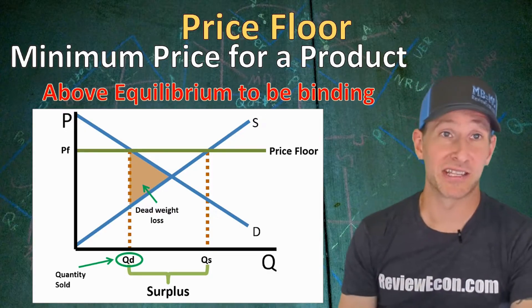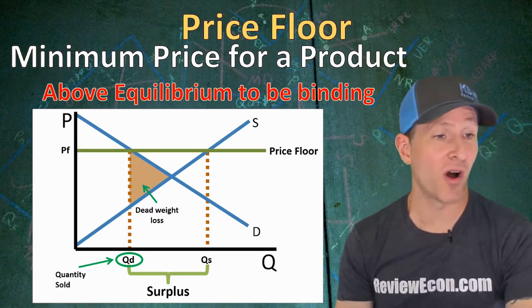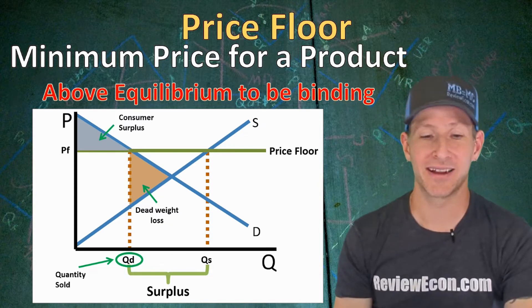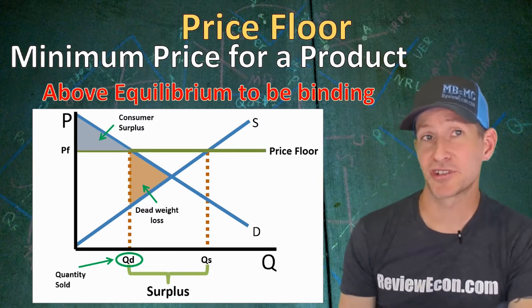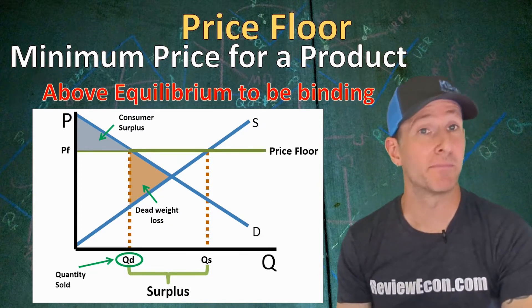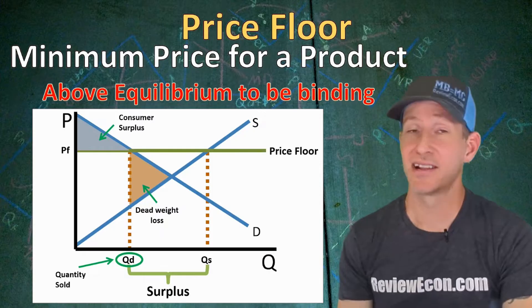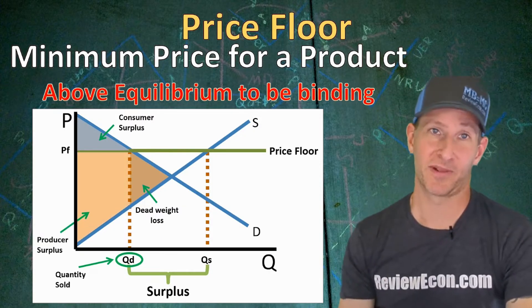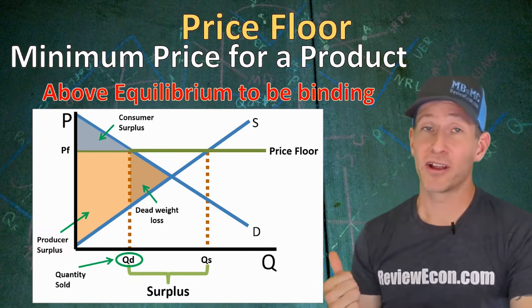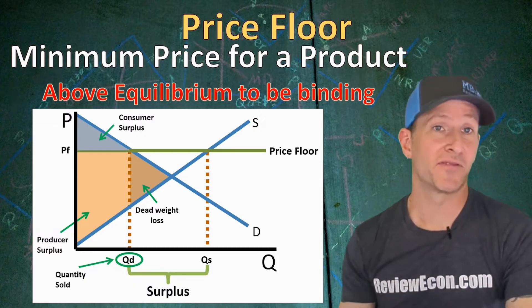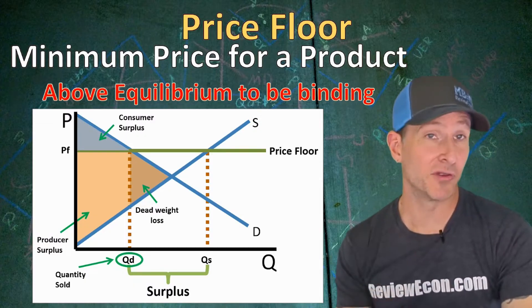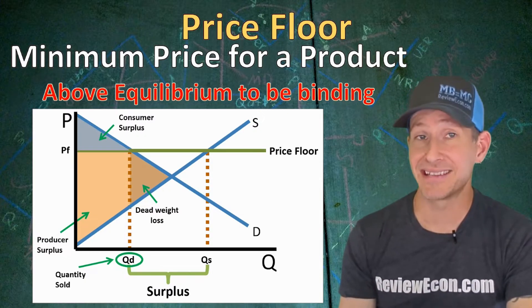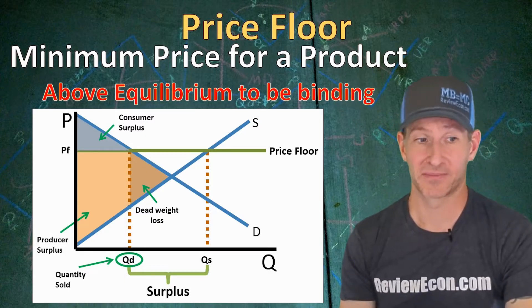Our consumer surplus is from the price all the way up to the demand curve — that triangle right there. The producer surplus is found by going from the PF price down to the supply curve at the quantity we're getting. You could calculate the areas of these shapes to find the value of the consumer surplus, producer surplus, and deadweight loss if there were numbers.